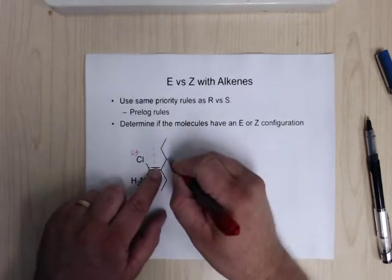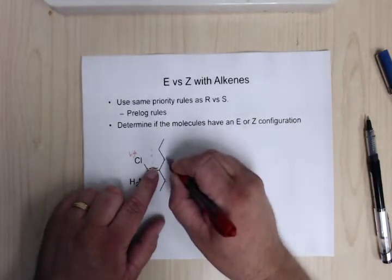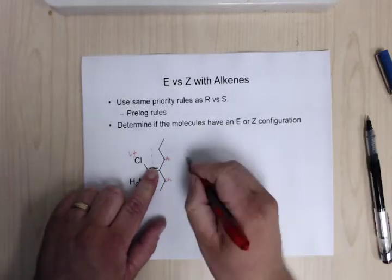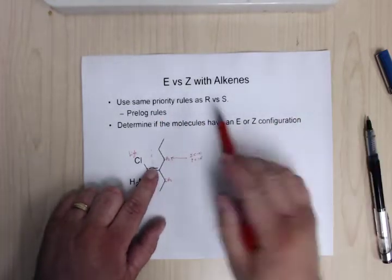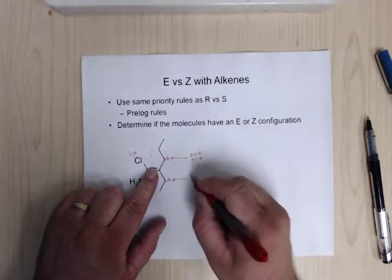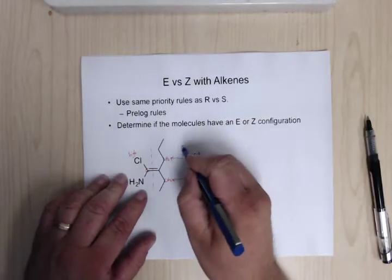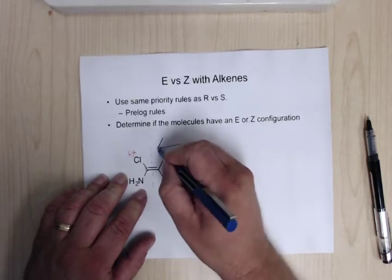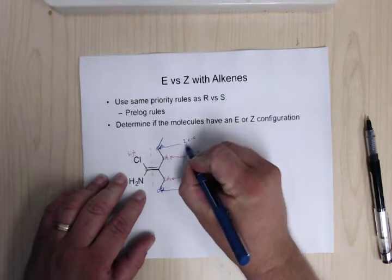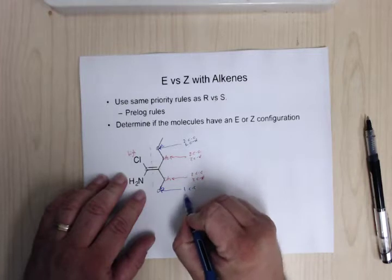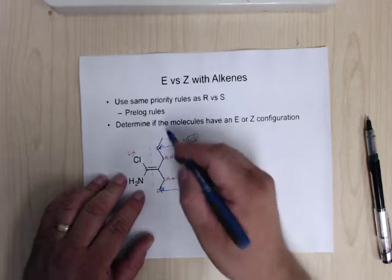Here we have a carbon versus a carbon — that's a tie, so we have to look at the bonds. This is a CH2, this is a CH2. Remember we're using the same priority rules as R and S. Both have two carbon-carbon bonds and two CH bonds, so it's a tie. We then look at the next level: CH2 versus CH3. The CH2 has two carbon-carbon bonds and two CH bonds; the CH3 has one carbon-carbon bond and three CH bonds. It's a tie on the heaviest bond, but CH2 has more of them, so CH2 is the high priority.